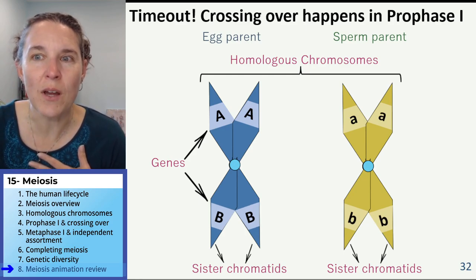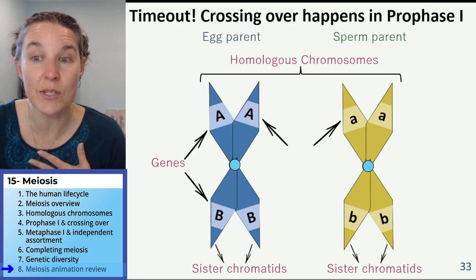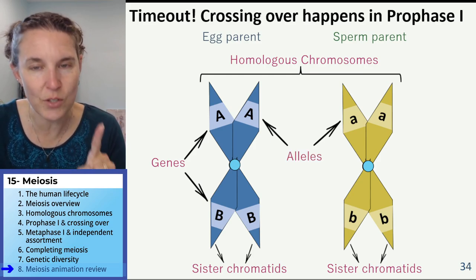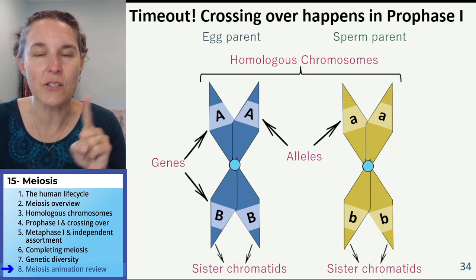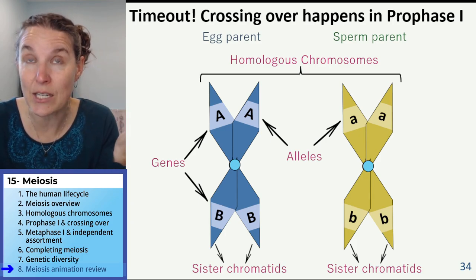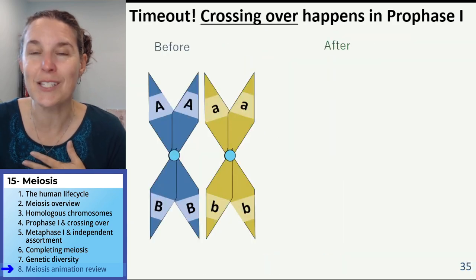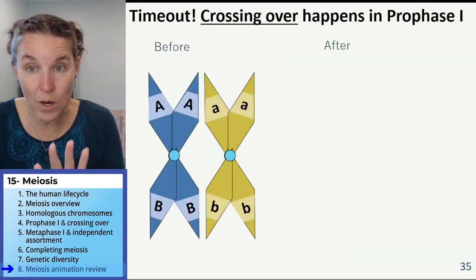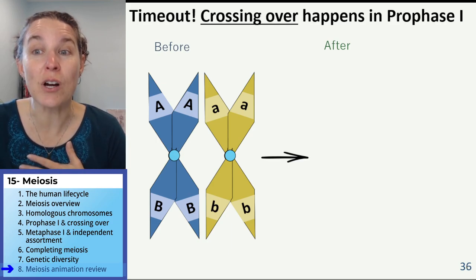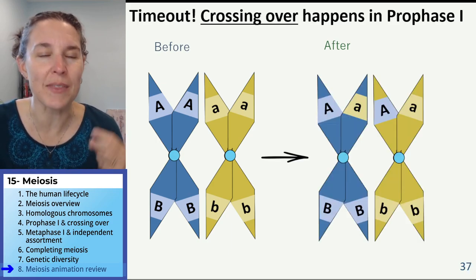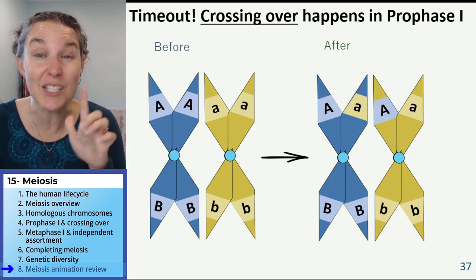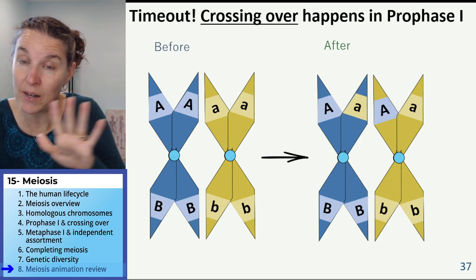What do we call those? Those are different forms of the same gene — those are our alleles. Alleles are different forms. This sets the stage for crossing over. So we get to watch it: before crossing over, everybody has their own alleles.